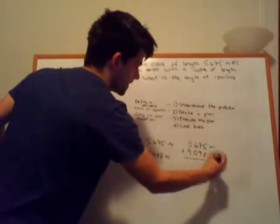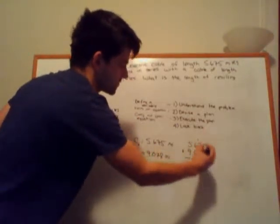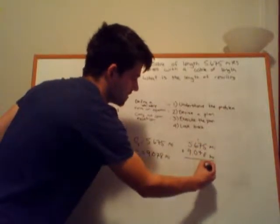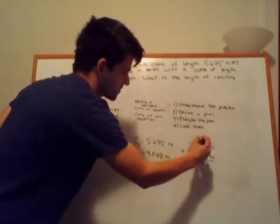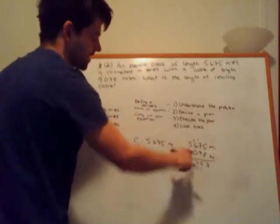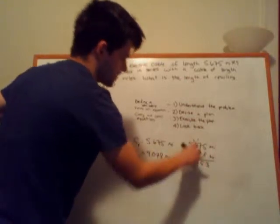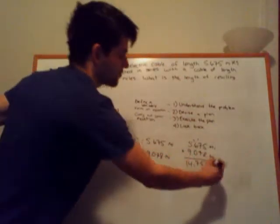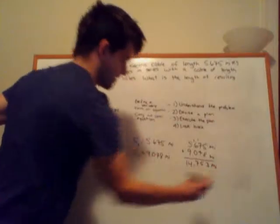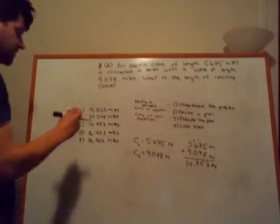And we will get 5 plus 8 is 13. Carry the 1. 7 plus 7 is 14. Plus 1 is 15. Carry the 1. 6 plus 1 is 7. 9 plus 5 is 14. And the decimal goes right here. So 14.753 miles is our answer. And that is indeed choice letter C.